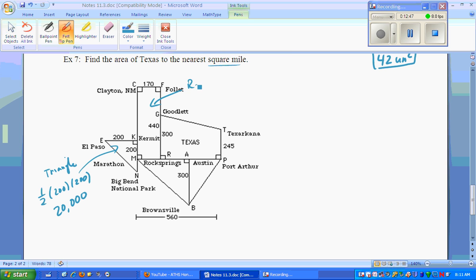Right here it looks like a rectangle. And it's got sides of 170 and the sides of 440. Multiply that together, you get 74,800.